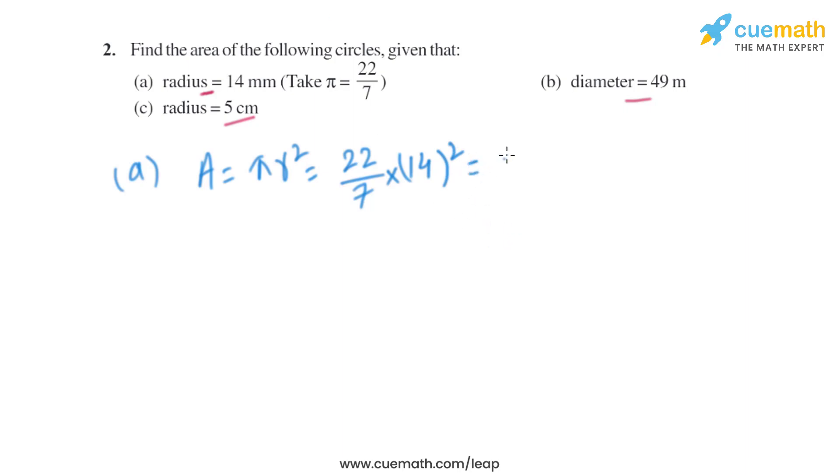So that will be the area of the circle. Now let's move on to part b. We know that the formula to find the area of the circle is πr². In this part the diameter is given, so we know that radius equals diameter by 2.